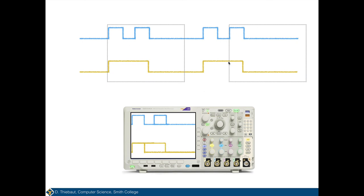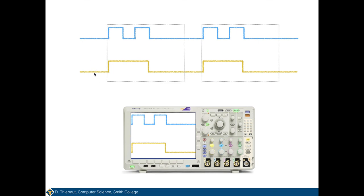Sometimes you'll see only the end of the top first pulse. So what you want to do is connect the yellow signal — the one with fewer transitions — to channel one. If you do that, you'll be able to see both signals clearly. That's it — I hope this helps you understand why you always want to put on channel one the signal that has the fewer transitions.